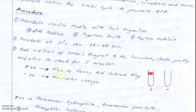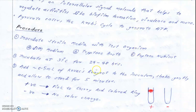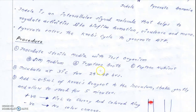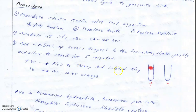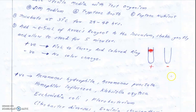If a pink to cherry red colored ring appears at the interface, then the indole test is positive. This means the indole is reacting with Kovac's reagent to produce a cherry red colored compound. If there is no color change, it means no indole was produced and the reaction between indole and Kovac's reagent did not occur — this is a negative result.